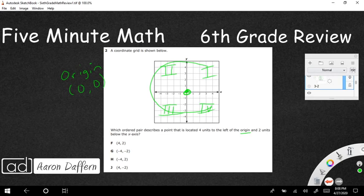Four units to the left. So I'm going to go one, two, three, four. So here's my four units to the left, and two units below the x-axis. So below is going to be down here. It's going to be this position right here.